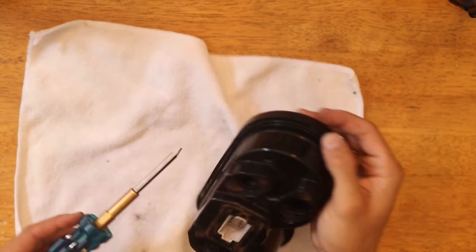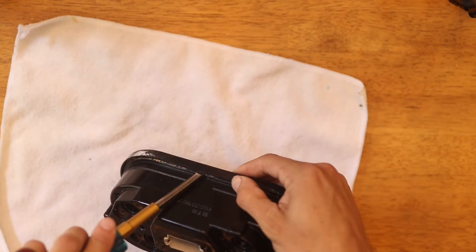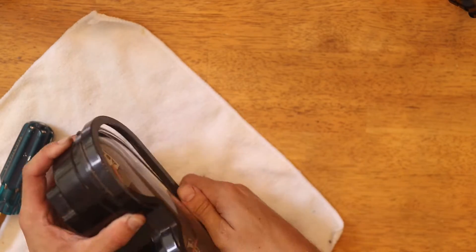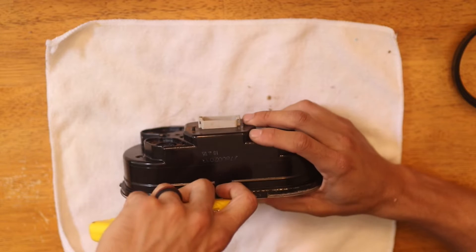After I removed those screws, I wasn't sure next where to go, so I started by removing this cover and then proceeded to separate the clear plastic from the black housing.